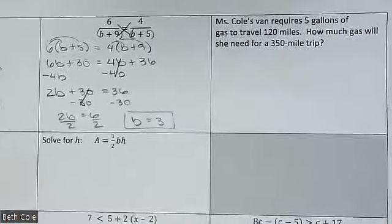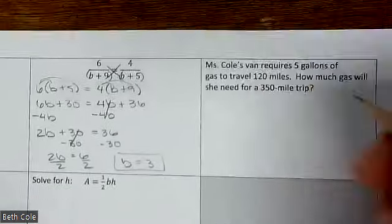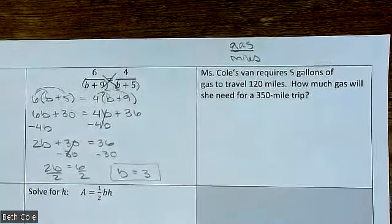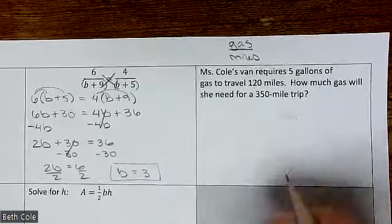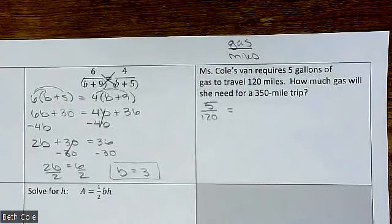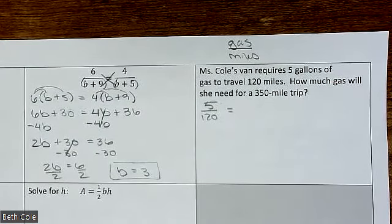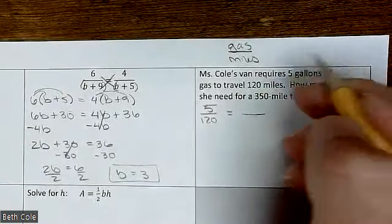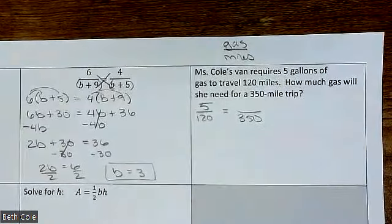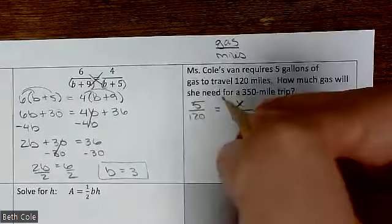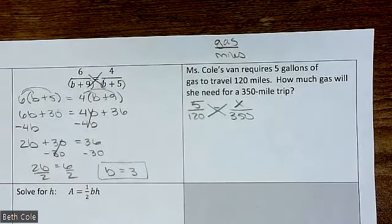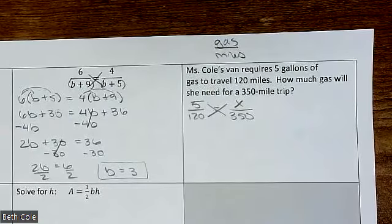All right, this one we're going to write on our own. Miss Cool's van requires 5 gallons of gas to travel 120 miles. You have two things: gas and miles. You remember writing that off to the side so you know what goes on top and what goes on the bottom — it doesn't matter which one goes where, you just have to be consistent. So you're going to have 5 over 120 equals — I don't want to read the rest to you, I want you to read it. 350 goes on the bottom in the miles spot, and x goes on top. We're going to cross multiply: 5 times 350 — I'll type that into Desmos — is 1750.